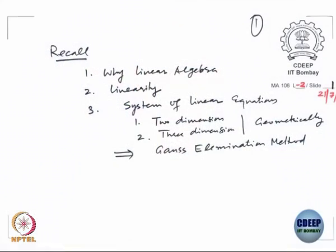Let us begin with today's lecture. In the previous lecture, we had started looking at why linear algebra is important to study. Then we started looking at how linearity arises in setups. Basically, there are two ways linearity can arise: one is because of linear equations, and the other is studying geometry in the algebraic setup.